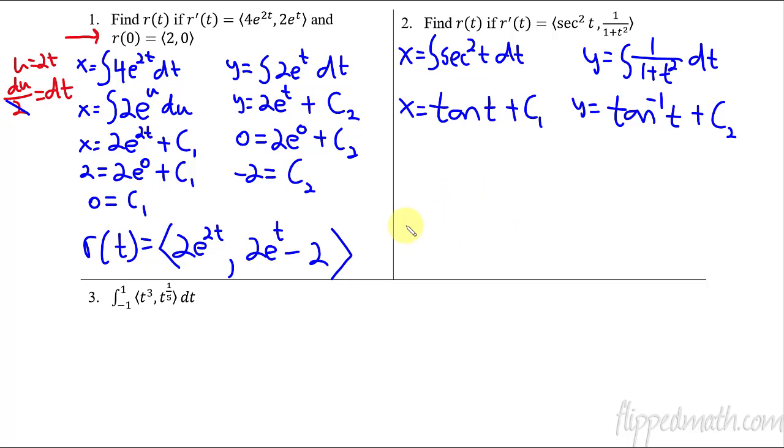And then I don't have to figure out what the c is because I wasn't given any other information. So I'm just going to say that r of t is equal to my vector-valued function. So this one is just tangent t plus a constant, c1. And then the other one is tangent inverse of t plus a constant. There's the first two. So pretty simple. We're not doing anything really that new except for just identifying each component part.